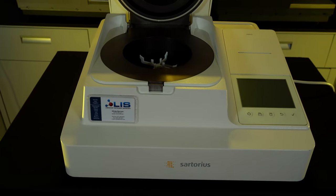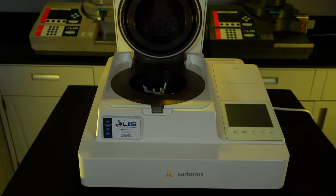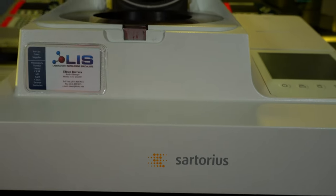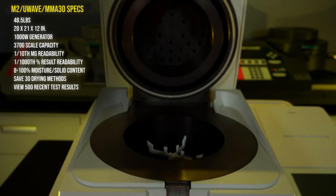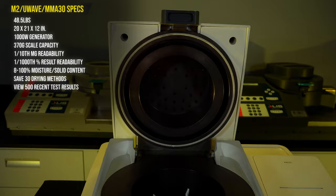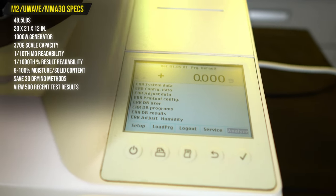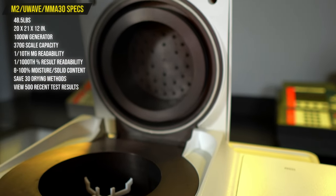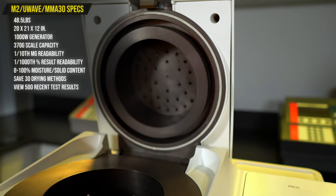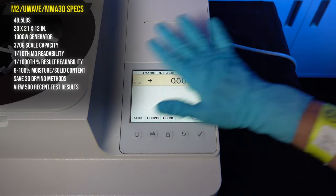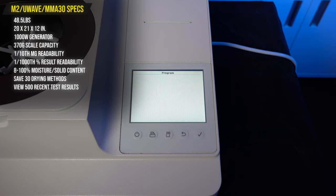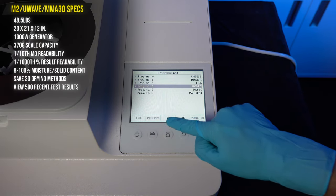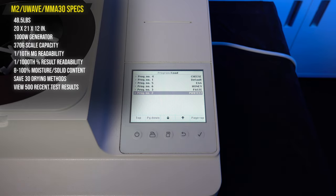We have yet to mention anything about the newer model that came out around 2010 called the LMA-200 that would replace the M2, U-Wave, and MMA-30. It's much lighter at 48.5 pounds and measures about the same at 20 by 21 by 12 inches. The instrument is heated by a 1,000-watt power generator. The maximum scale capacity is 70 grams and can read within one-tenth of a milligram. Testing results are very accurate with the readability within one-one-thousandth of a percentage while being able to determine between 8 and 100% of moisture or solid content. You can save up to 30 different drying programs and view up to 500 recent testing results.